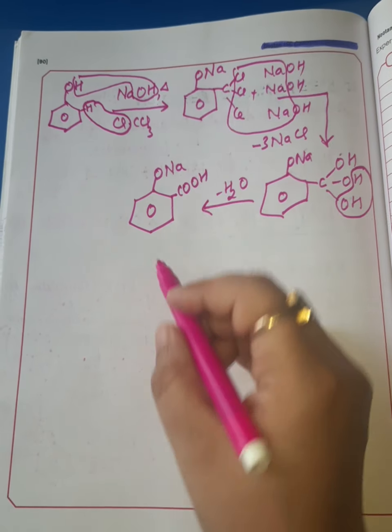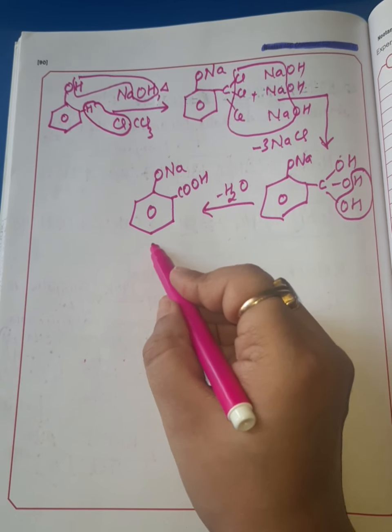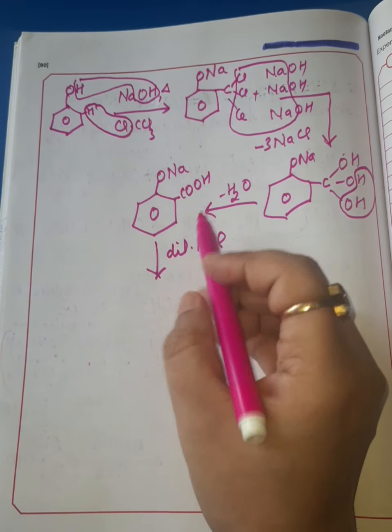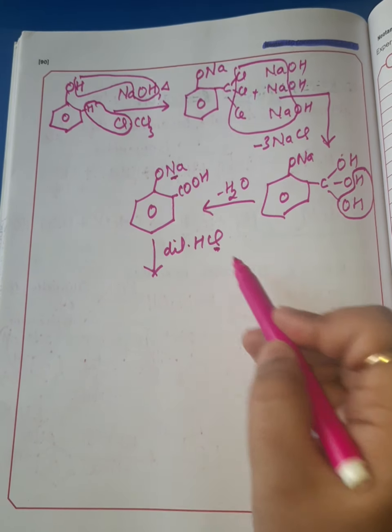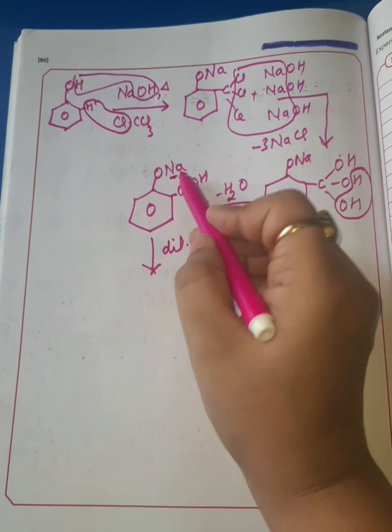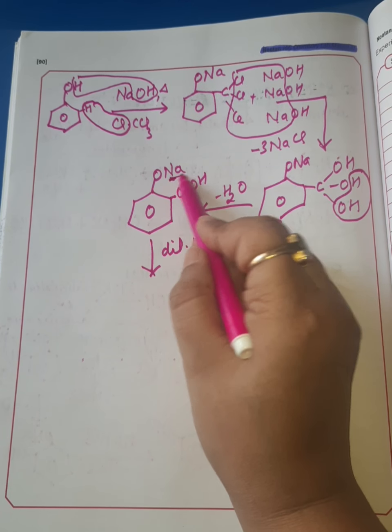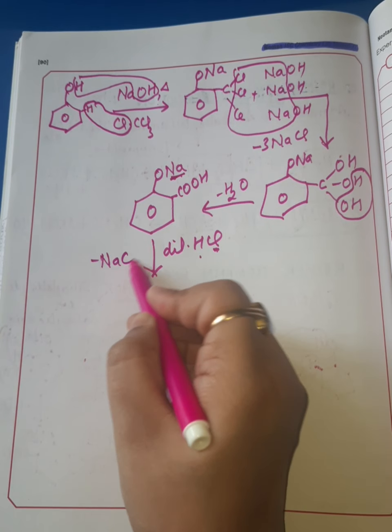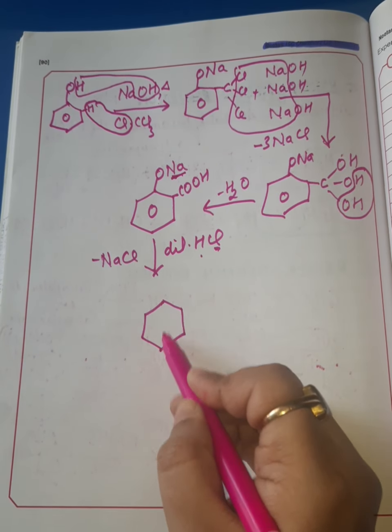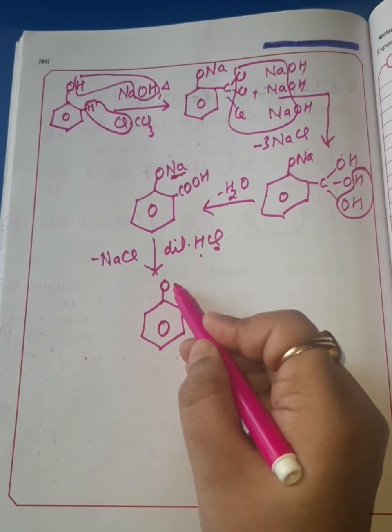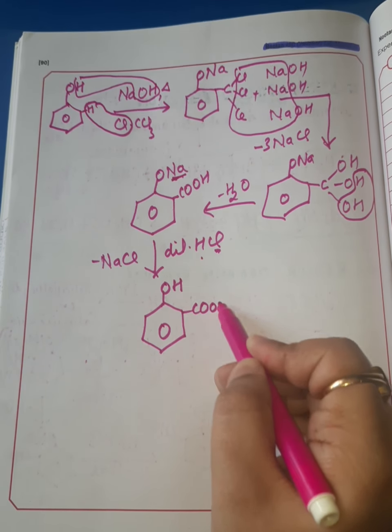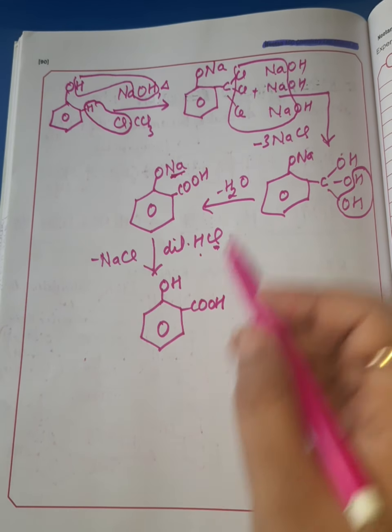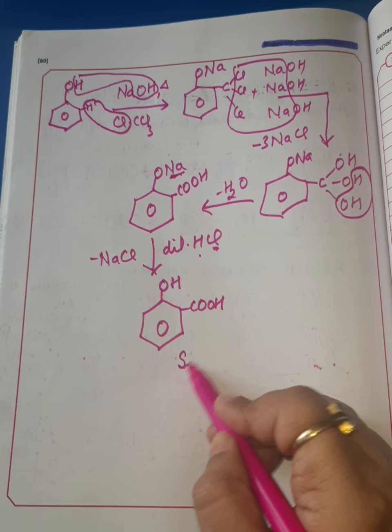This compound on acidic hydrolysis with dilute HCl undergoes neutralization. Substitution of Na by H takes place with loss of NaCl, and we get OH and COOH. This compound is salicylic acid.